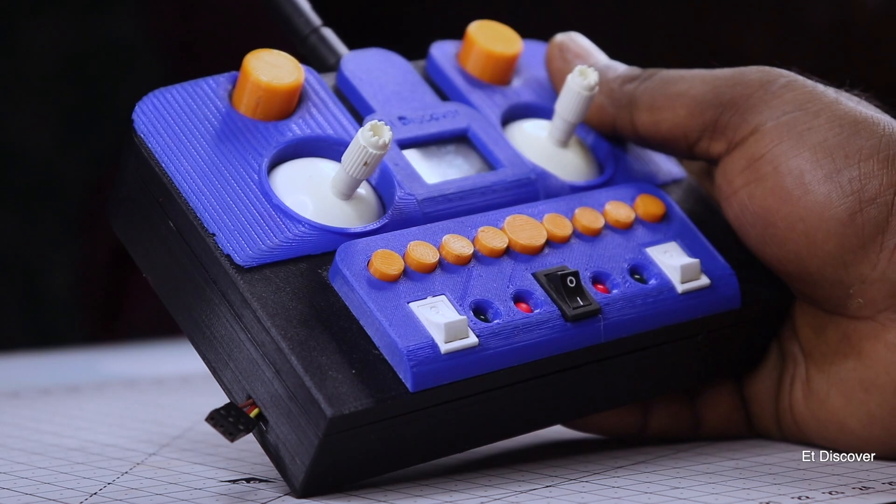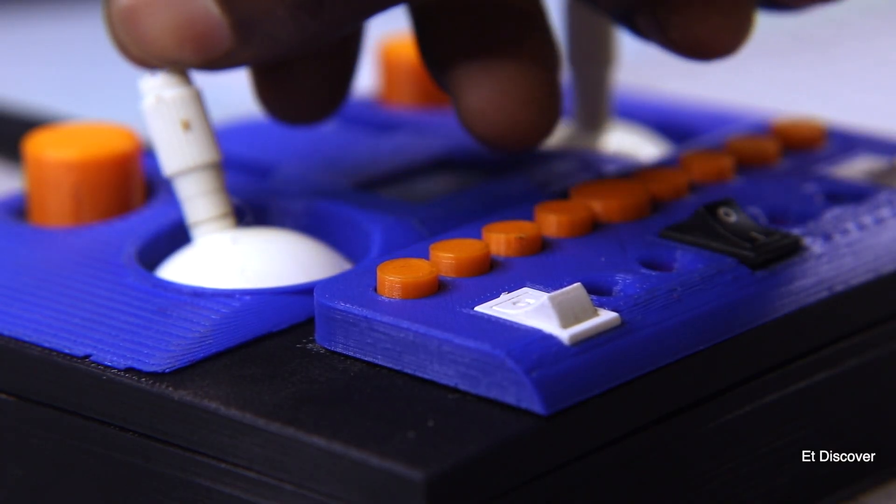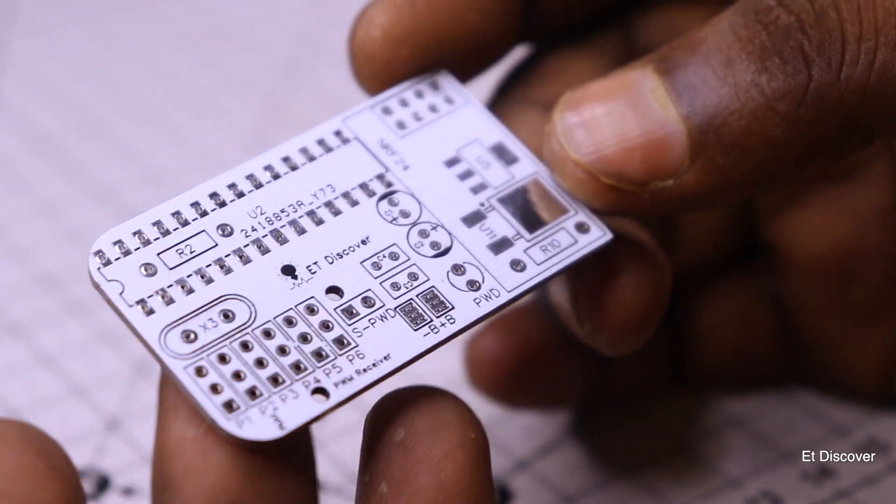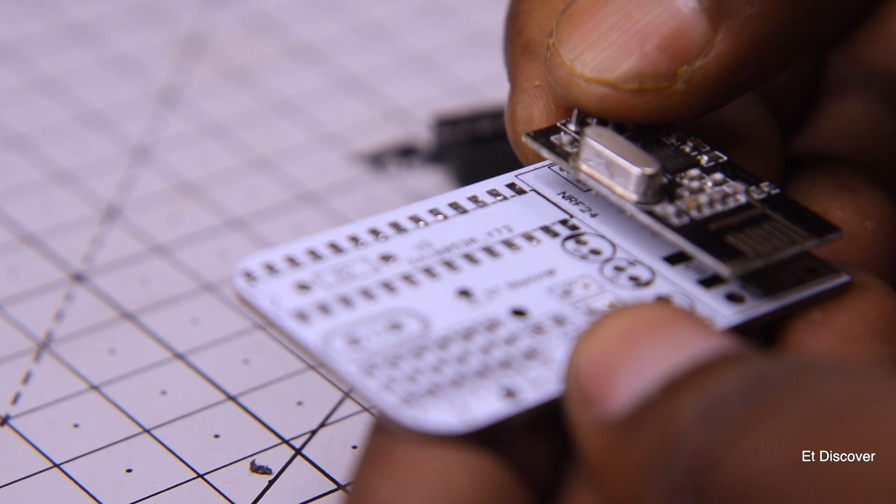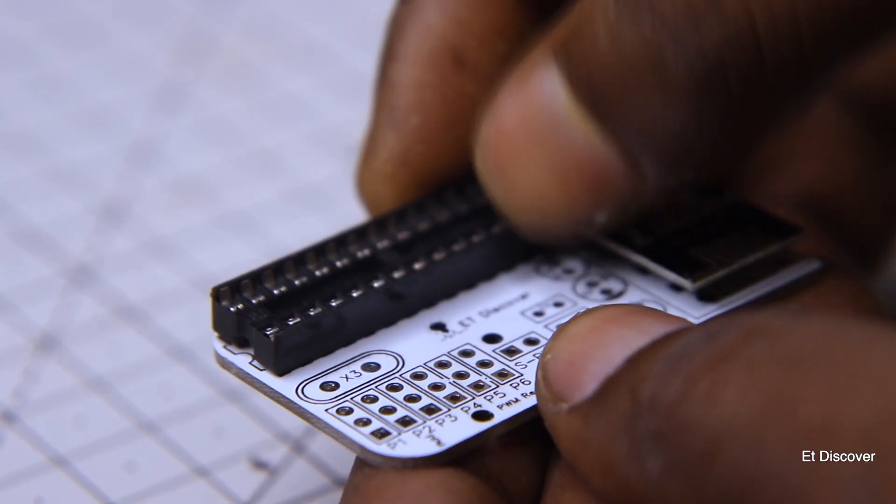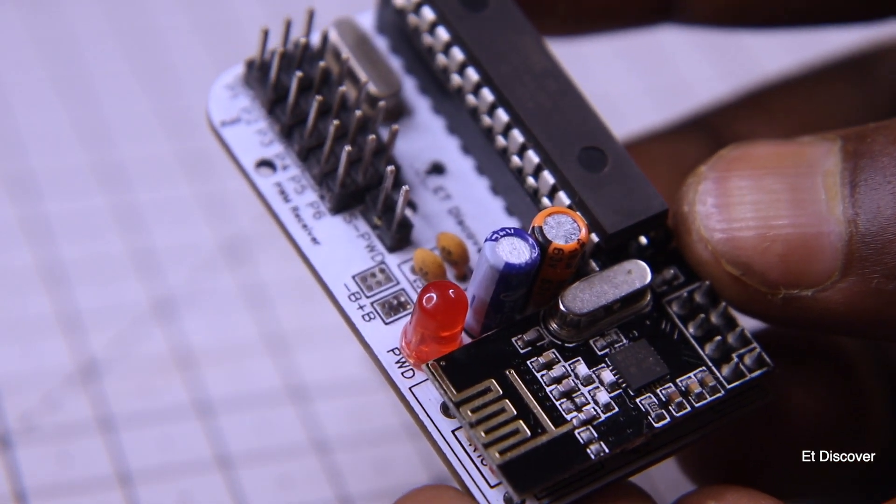Ok finally our transmitter is done. You can see. So you know guys, as I promised, this time I will make a PWM receiver. This is the board of the PWM receiver. And look, there is nothing here. Just an Atmega328p IC and the NRF24 transceiver module. After everything is mounted, it will look a little bit like this once it is complete properly.